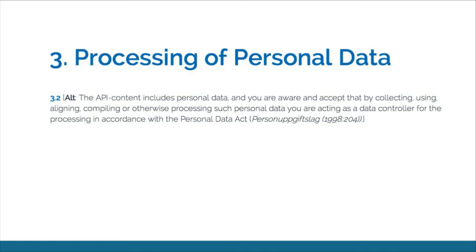Here's one example of a choice influenced by provisions of mandatory law: if you as an API provider send out data that contains personal data, your users receiving this data will have certain obligations under data protection law. It's not a mandatory requirement under Swedish law to inform your users about this, but since our goal was to write a fair license that keeps users well informed, this is one choice you can make to inform your users about it.